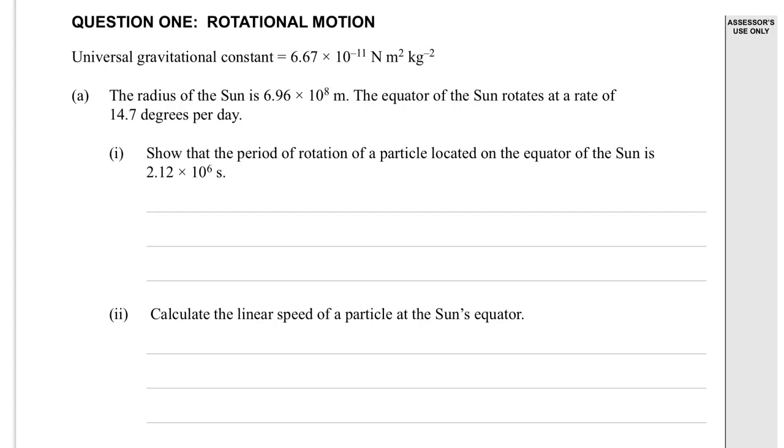Question 1, rotational motion. We're given the universal gravitation constant there, so it's probably a gravity question initially. The radius of the Sun is 6.96 times 10 to the 8 metres. The equator of the Sun rotates at 14.7 degrees per day. Show that the period of rotation of a particle located on the equator of the Sun is that.